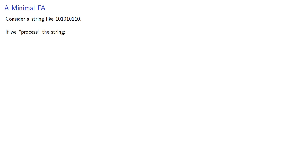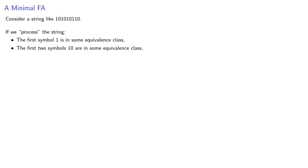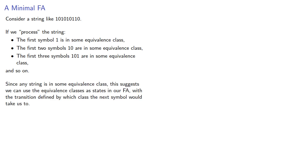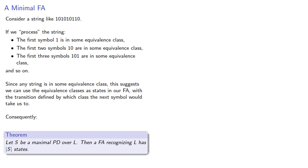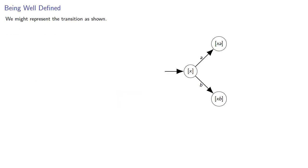This leads to the following. Consider a string: if we process it, the first symbol is in some equivalence class, the first two symbols form a string in some equivalence class, the first three symbols form a string in some equivalence class, and so on. Since any string is in some equivalence class, we can use the equivalence classes as our states in a finite automaton, with the transition defined by which class the next symbol would take us to. Consequently, let S be a maximal pairwise distinguishable set over our language — then a finite automaton recognizing our language has that many states. We might represent the transition as shown.